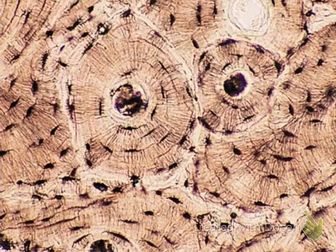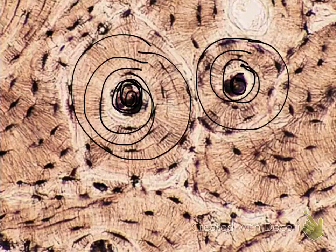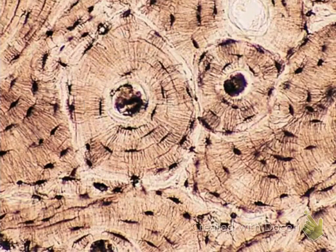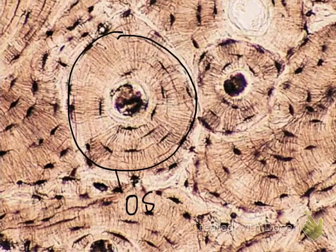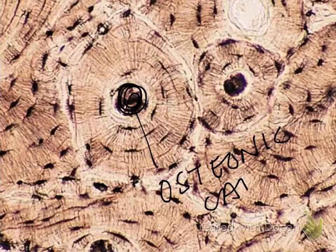The first thing you notice about this tissue is the dark center in the middle with concentric circles around each one. Whenever you see those concentric circles, you are looking at bone tissue. One of those big round circles is called an osteon or Haversian system. The center portion of that osteon is called the osteonic canal or central canal.